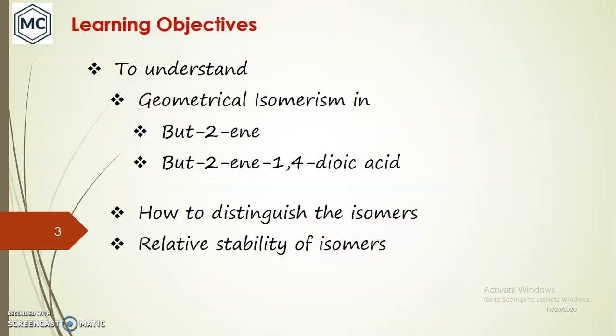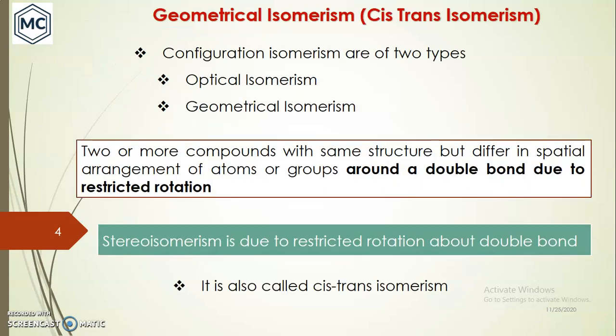Our learning objectives are to understand what is geometrical isomerism. We will study it in compounds like but-2-ene and but-2-ene-1,4-dioic acid. We will also discuss how to distinguish geometrical isomers and what the relative stability of geometrical isomers is.